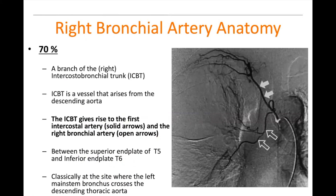The intercostal bronchial trunk is exactly what it sounds like — a trunk with two vessels coming off it: the right bronchial artery and the first intercostal artery. You can see that here with the solid arrows: this is the first intercostal artery, and over here we have the right bronchial artery, with our catheter in place.